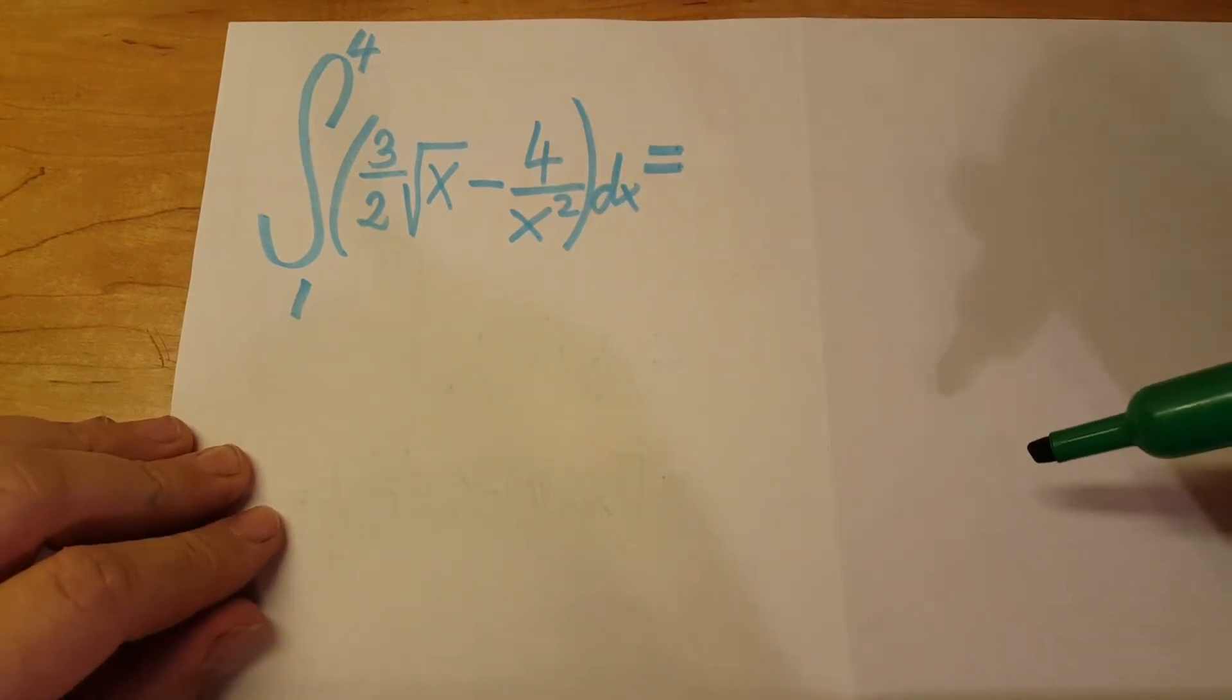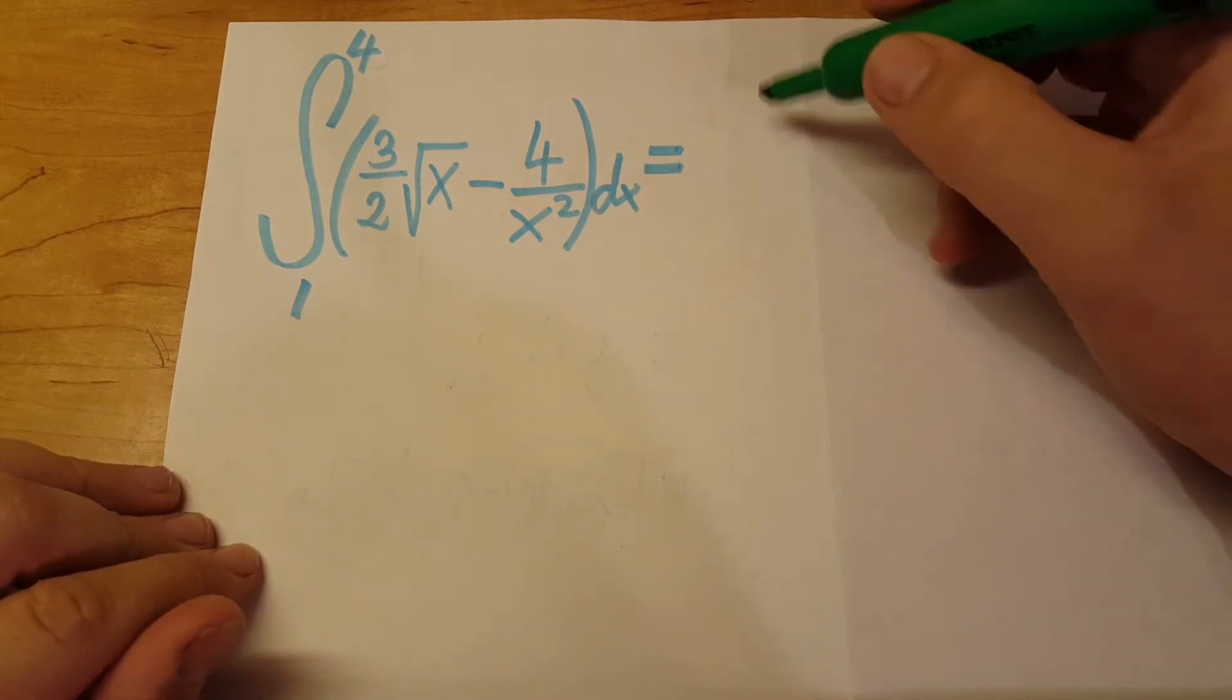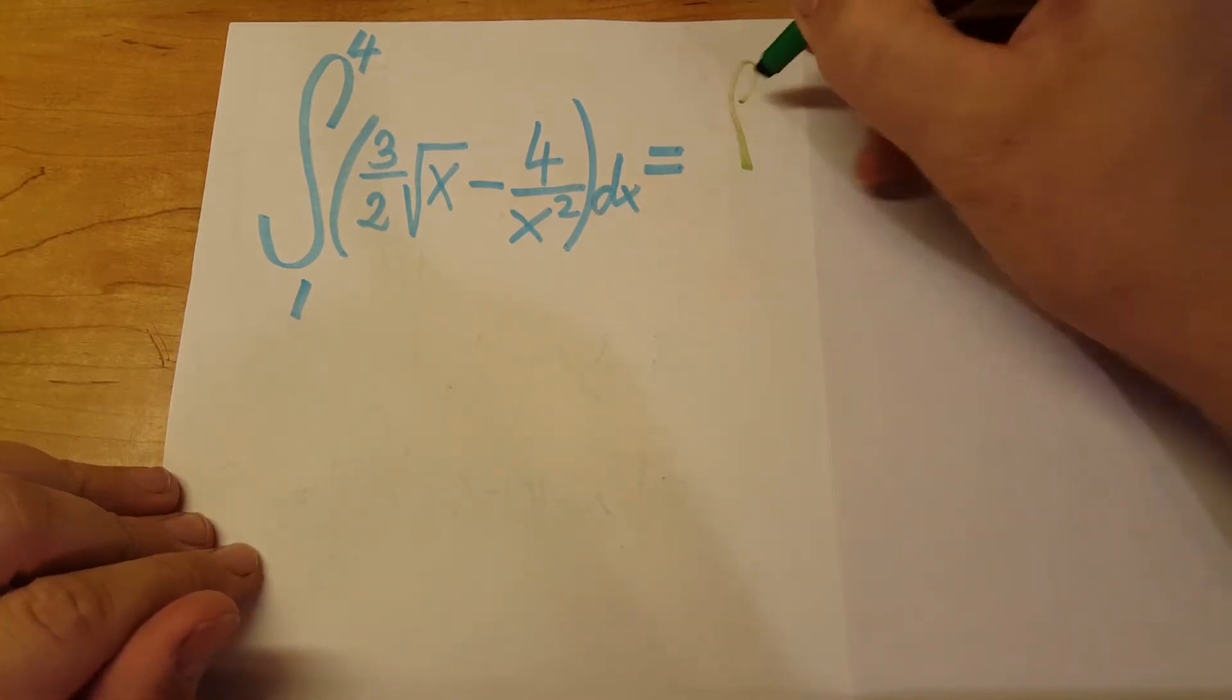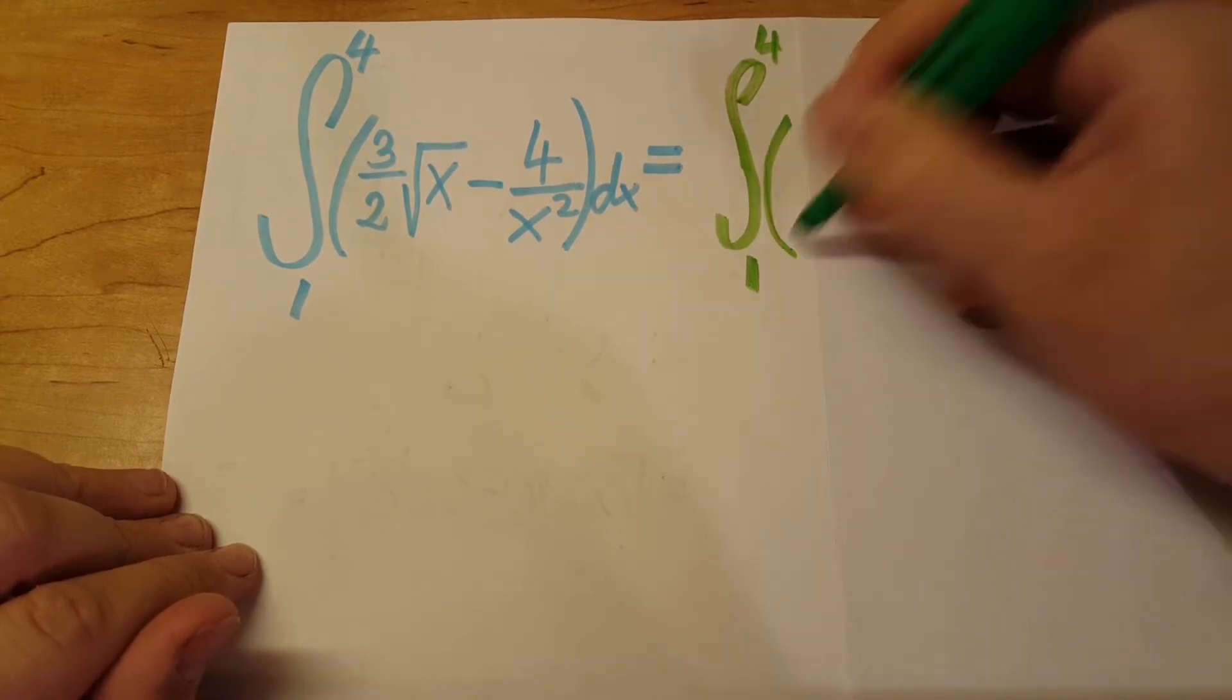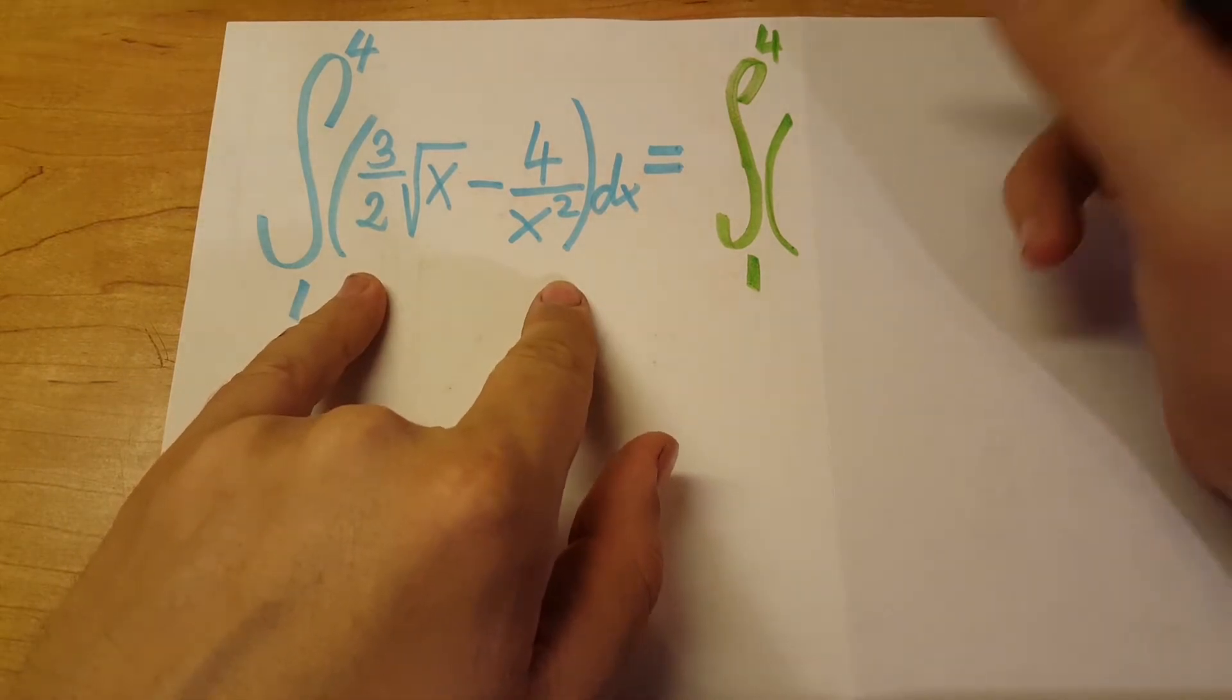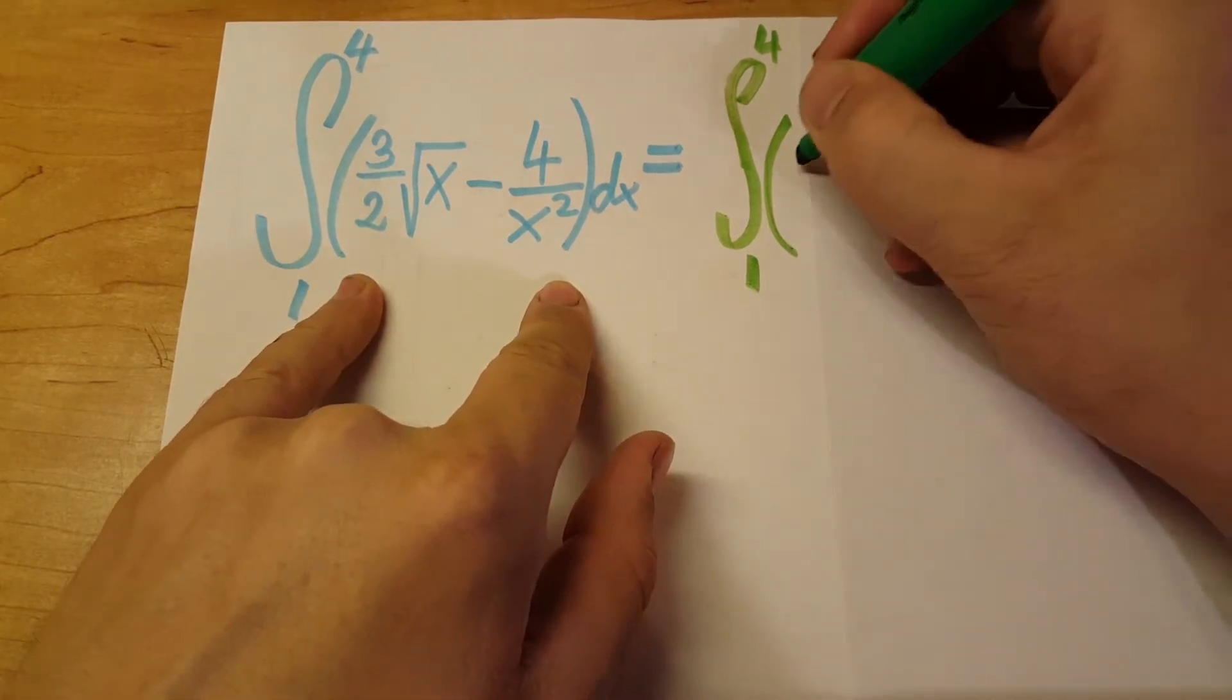Alright, first let's rewrite it so it doesn't look so menacing. This one stays the same and let's work inside the parentheses. 3 over 2, we're not going to touch that.